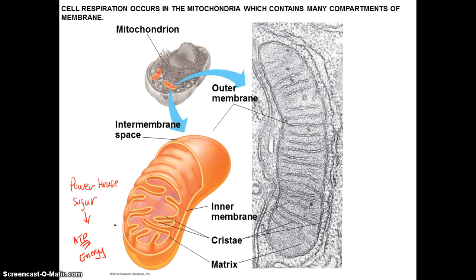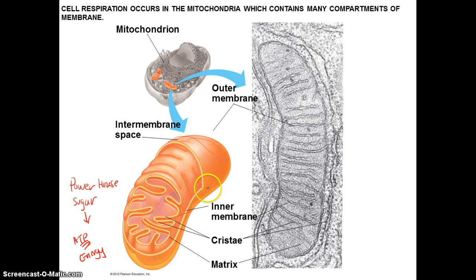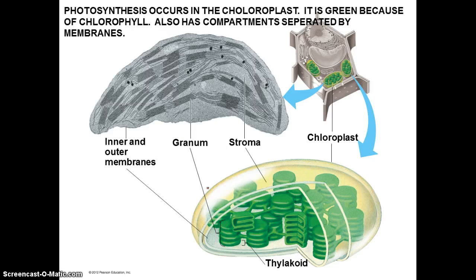If you look closely at the mitochondria, it's got an outer membrane, an inner membrane, and that inner membrane is further folded. Many reactions are separated by membranes. If you look at photosynthesis, it too is composed of parts with a lot of membranes that separate the series of reactions it takes to make food.